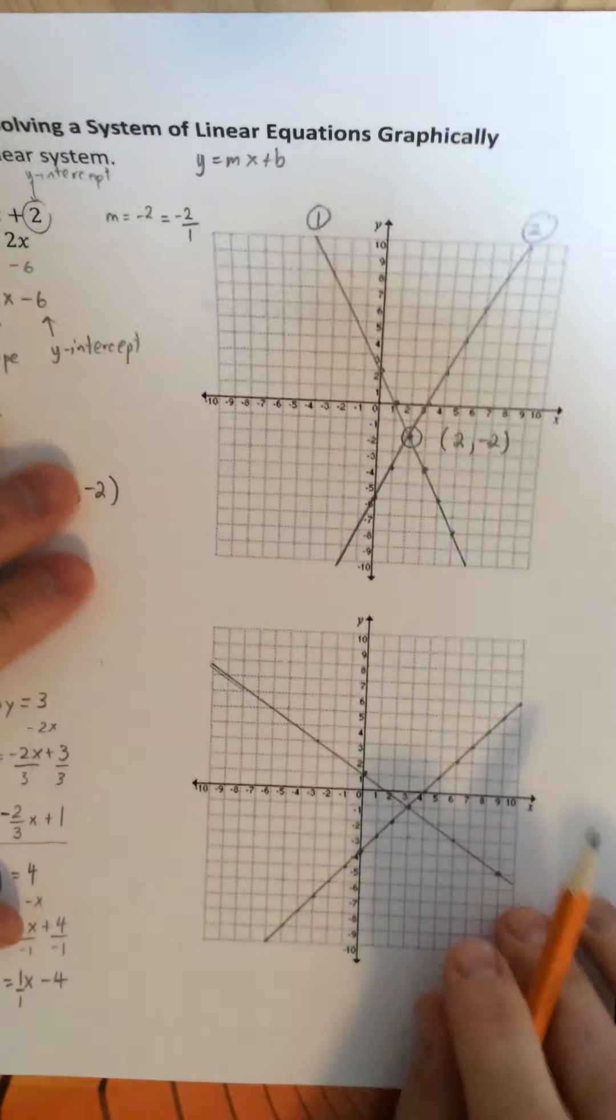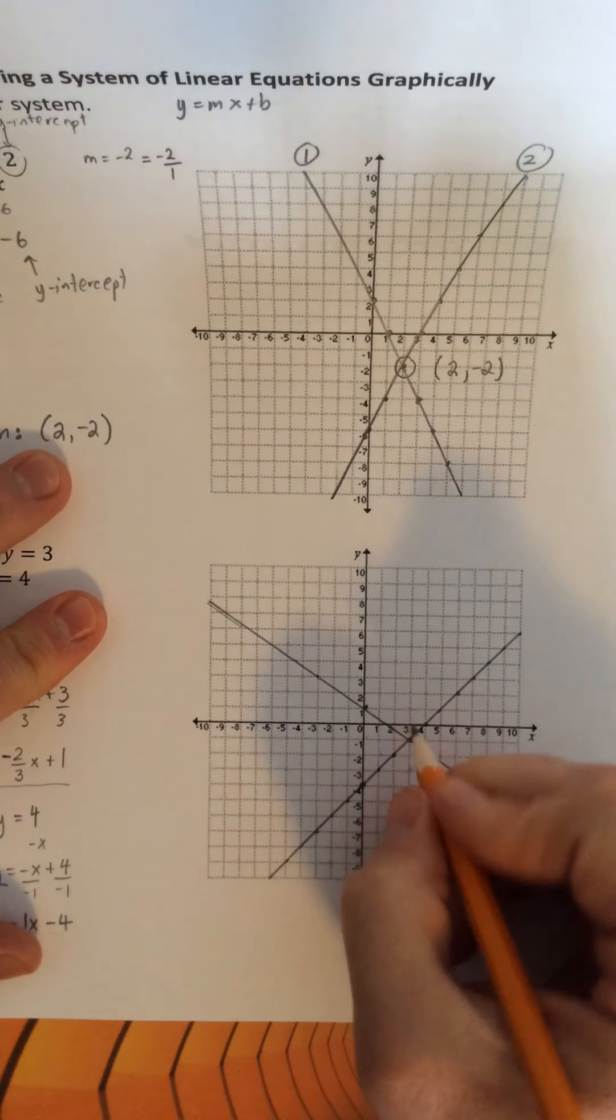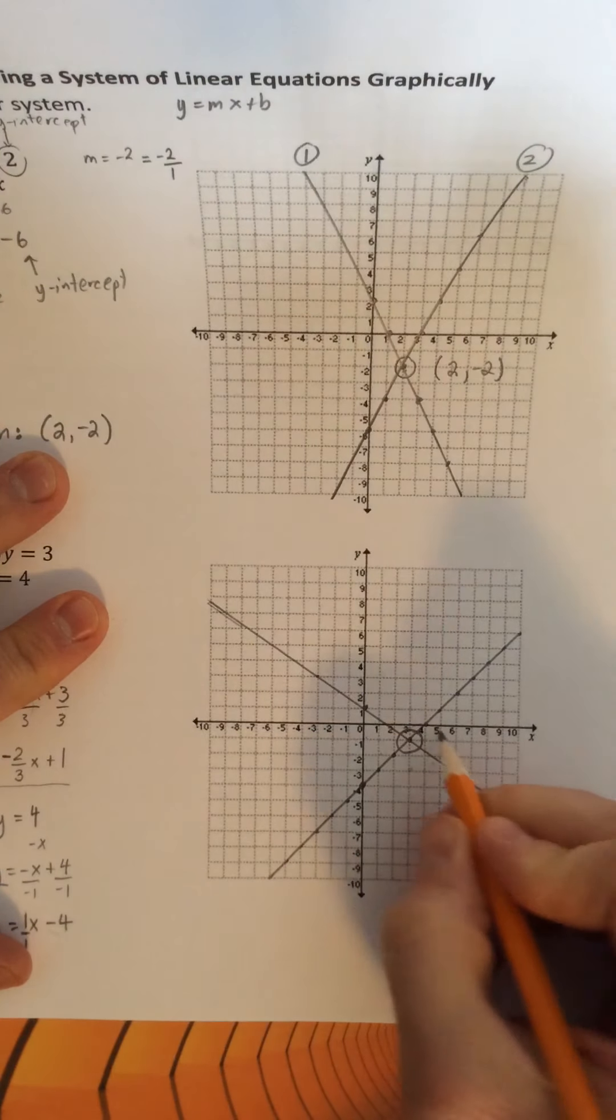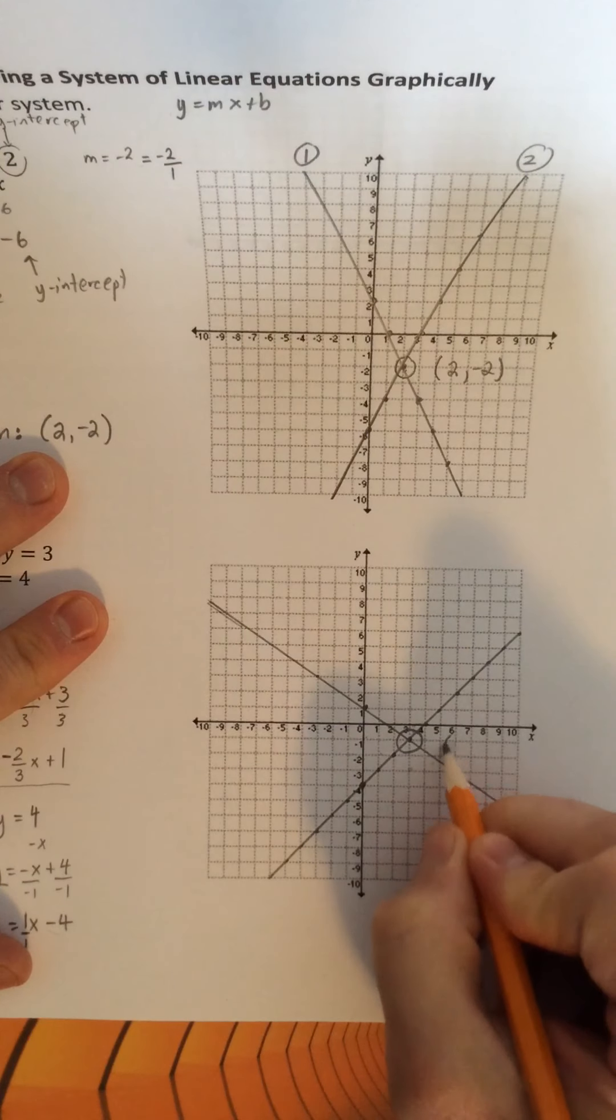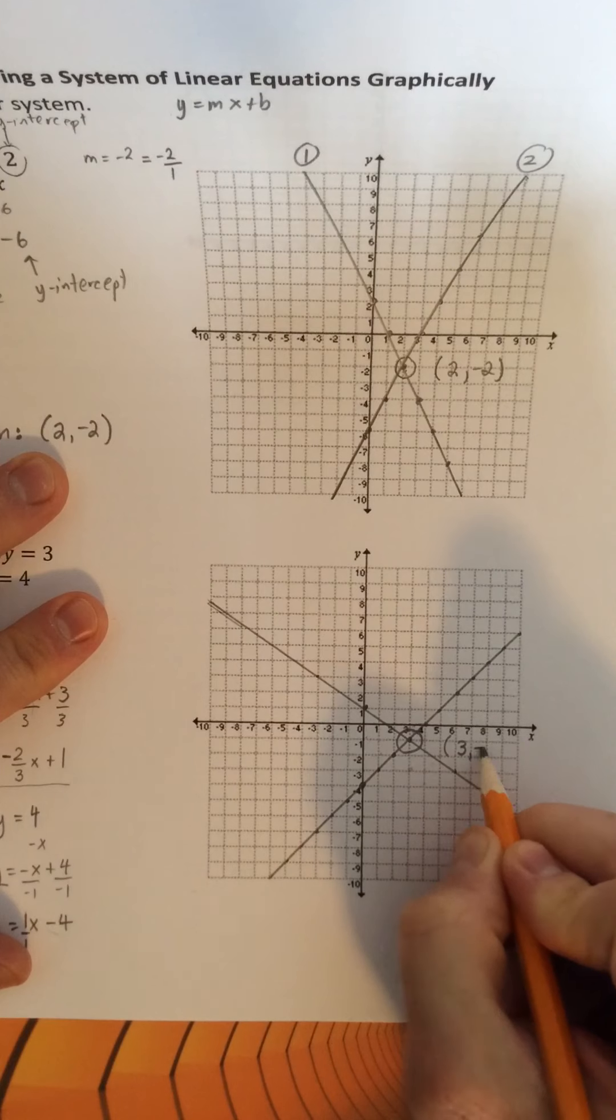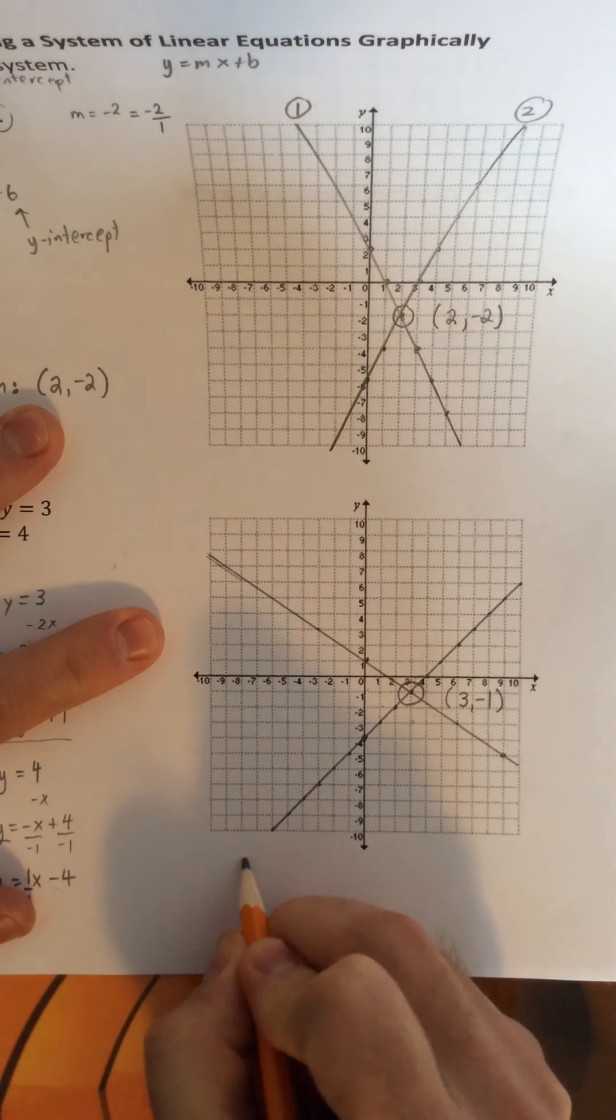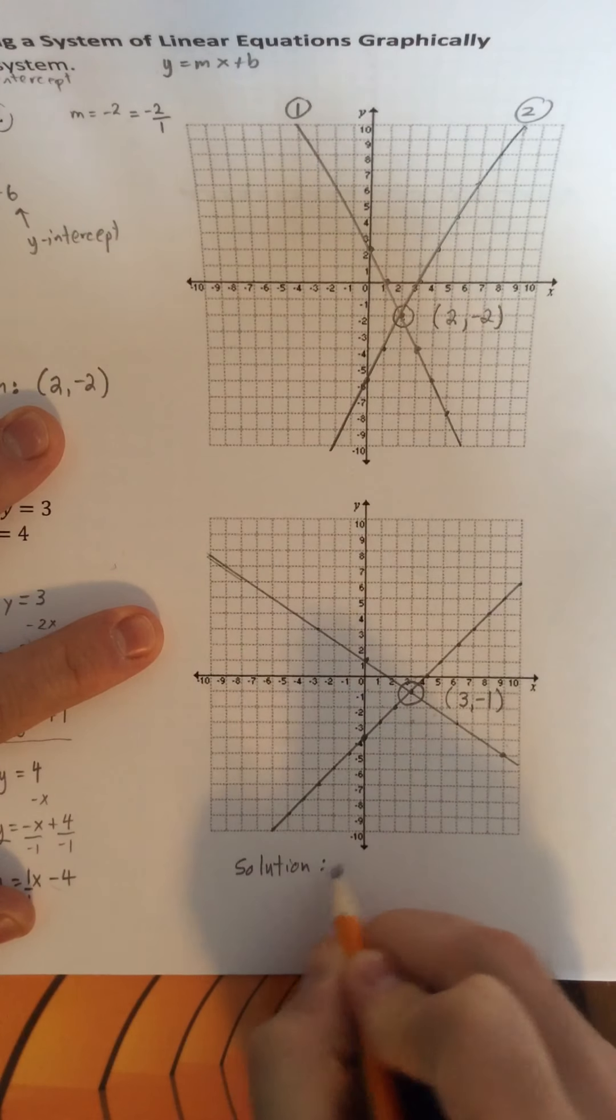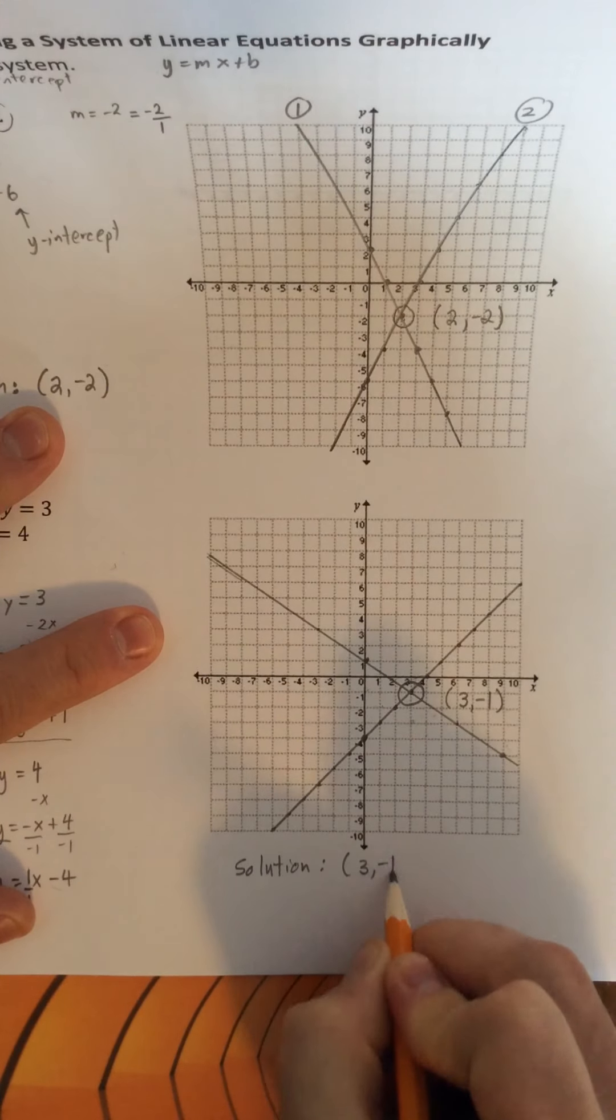We can see that for this system that the intersection point is here. Now again, I'm going to circle this. Now on this graph, this intersection point is at 3 along x and at negative 1 along y. So the solution for this system is 3 and negative 1.